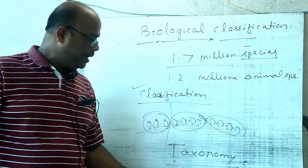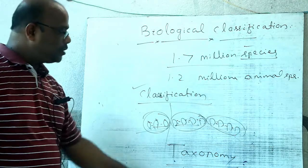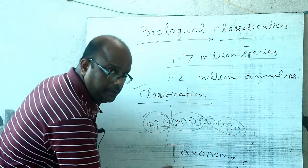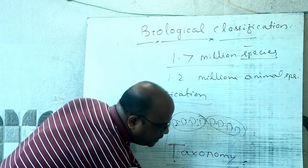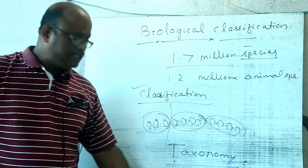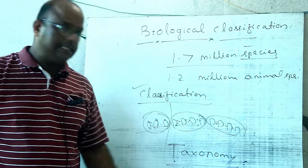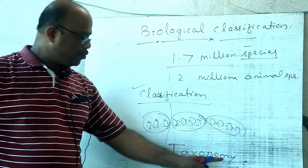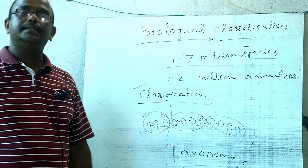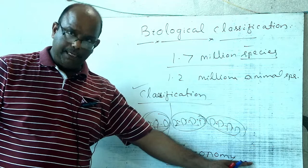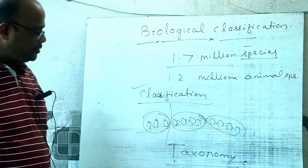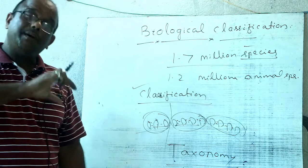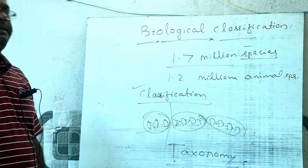The term taxonomy was introduced by A.P. de Candolle, but Carolus Linnaeus is regarded as the father of taxonomy. Linnaeus described his taxonomy as systematics. Taxonomy deals with the study of nomenclature, identification, and classification of organisms.